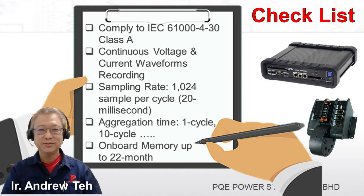Feature 4: the power quality analyzer must come with both single-cycle and 10-cycle aggregation time throughout the recording period up to 22 months. Single-cycle aggregation time is needed for accurate and detailed voltage dip analysis, enabling correct voltage dip mitigation recommendations. Feature 5: it must be equipped with on-board memory able to store all three-phase waveforms and all electrical parameters at 1024 samples per cycle for up to 22 months. Feature 6: it must come with a valid accuracy validation certificate traceable to a valid C-RIM calibration certificate.